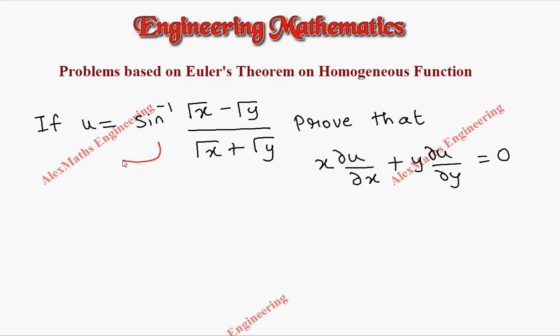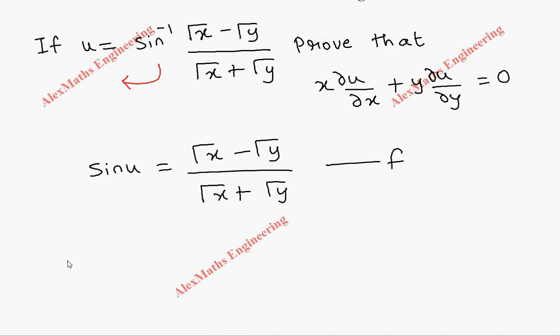We carry this sine inverse to the other side, so this becomes sine u, and on the other side we have the expression root x minus root y divided by root x plus root y. Let's take this as a function f, and let's write f as f(x,y) because this function is in terms of x and y and we have to check whether it is homogeneous or not.